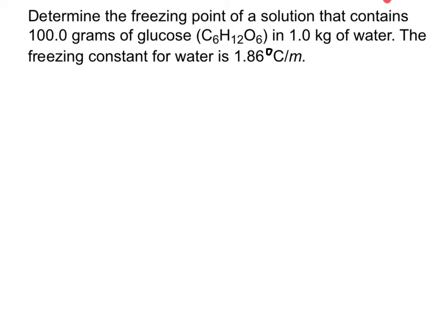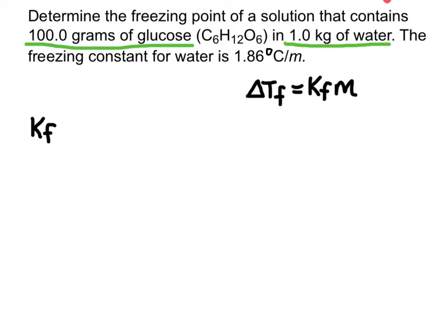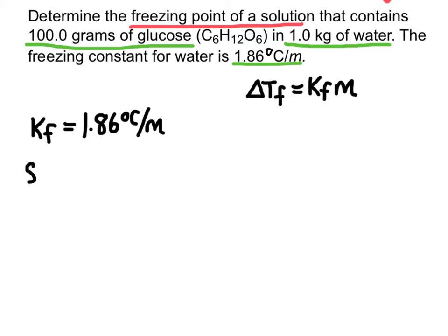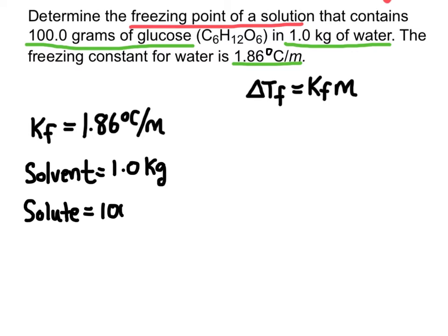The problem says: determine the freezing point of a solution that contains 100 grams of glucose in 1 kilogram of water, given the freezing constant for water. Here's the equation. The information given is 100 grams of glucose in 1 kilogram of water, and the freezing constant is 1.86 degrees Celsius per molal. The kilograms of solvent is 1 kilogram and the solute is 100 grams.